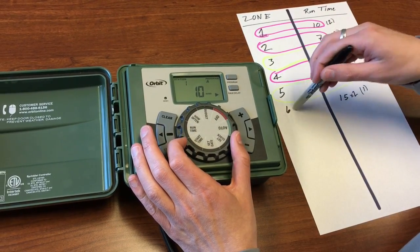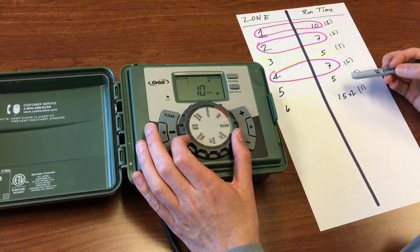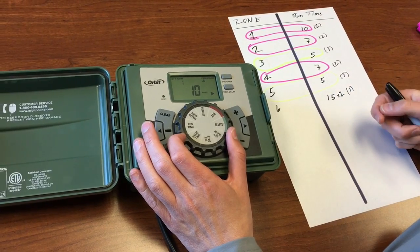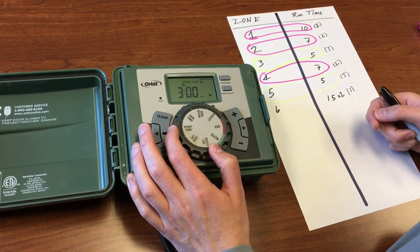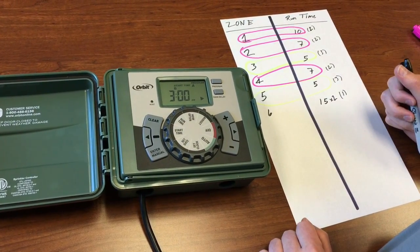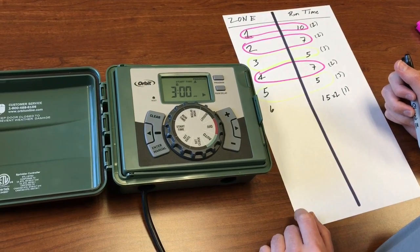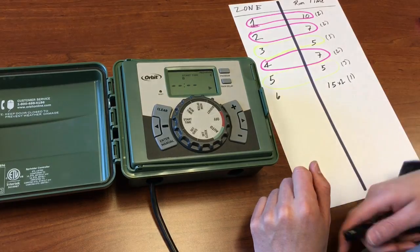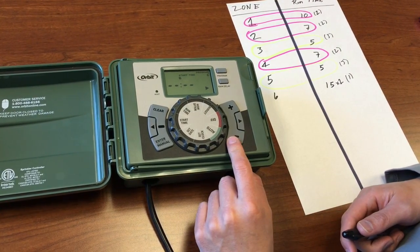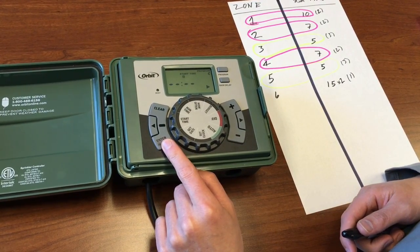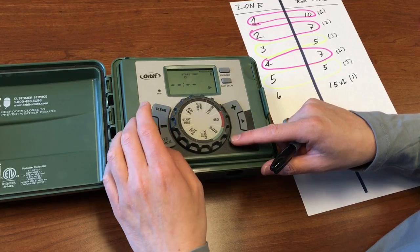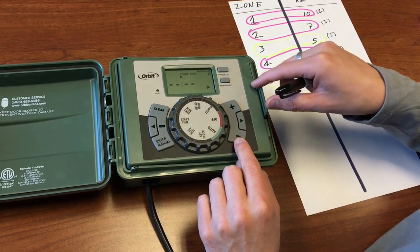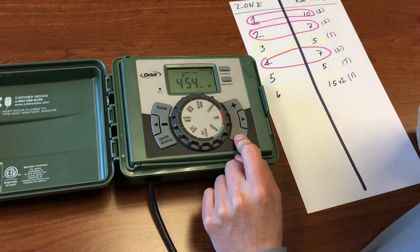Finally we have this zone 6 that we're going to have run 15 minutes twice a day which is a total of 30 minutes. And that needs to run every single day. This is a drip zone. So we need to go over to program C.